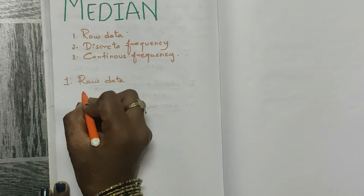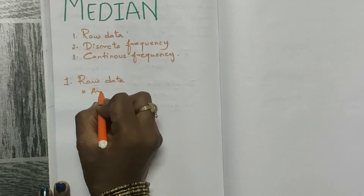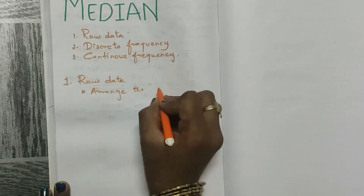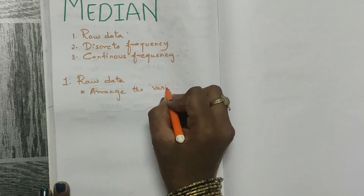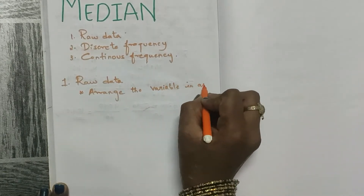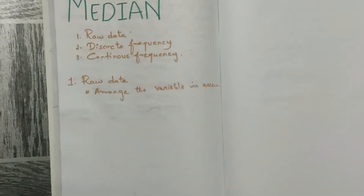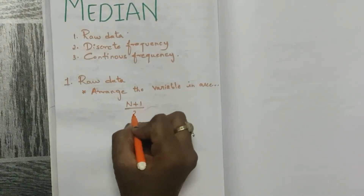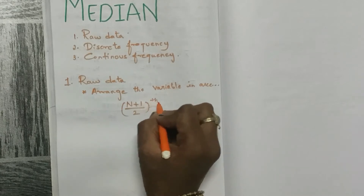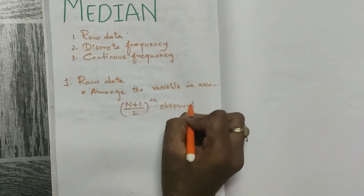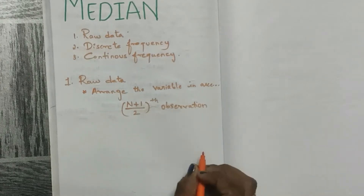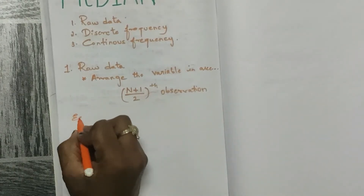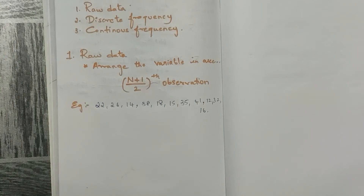For raw data, the first procedure is you have to arrange the variables in ascending order. The formula for raw data is (n+1)/2 th observation. Now we will solve an example problem.